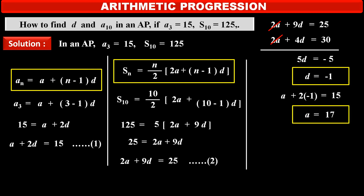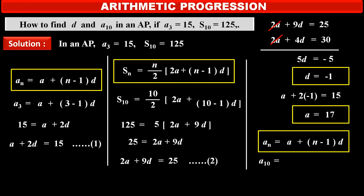Now we have to find A10, the 10th term of this AP. So, again we have to use the formula of nth term: An is equal to first term A plus in bracket n minus 1 into common difference D. So, 10th term A10 is equal to value of A, which is 17, plus in bracket value of n, that is 10 minus 1, into common difference minus 1. Solving this, we get the 10th term of this given AP, that is A10, is equal to 8.